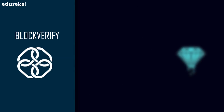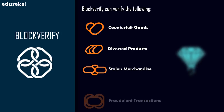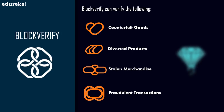Anyone can access this identification number on the blockchain to verify whether a product is genuine or not. So things such as medication or anything else can be verified with ease using this solution, and anyone can conduct the verification utilizing this technology. What all can BlockVerify do? Well, it can help you identify counterfeit goods, diverged products, stolen merchandise, and even fraudulent transactions. So that was all about BlockVerify.